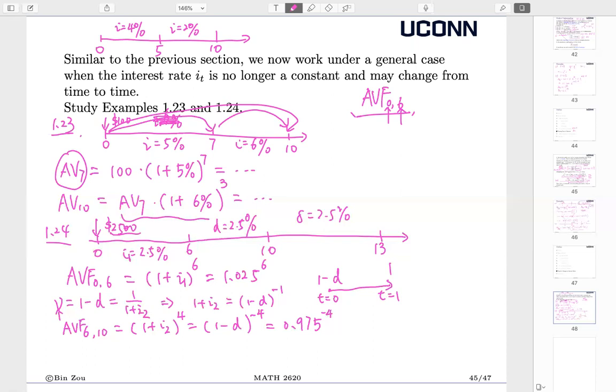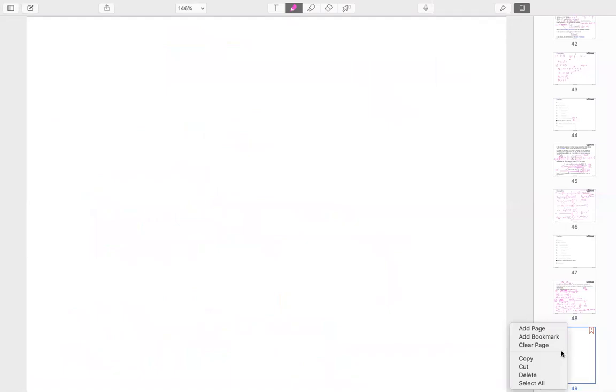Finally, the final part is actually easy. From 10 to 13, all we need to do is to calculate the exponential function, delta t. Delta is 2.5 percent. From 10 to 13, there are 3 years. So finally, my AV at 13 will be my initial investment, which is 2500 times all those AV factors from 0 to 6, from 6 to 10, from 10 to 13. Eventually, I will get a result. That is the final result. So basically, 1.24 is likely, by far, the most difficult question we have solved. So if you are okay with 1.24, you should be completely good for this chapter.